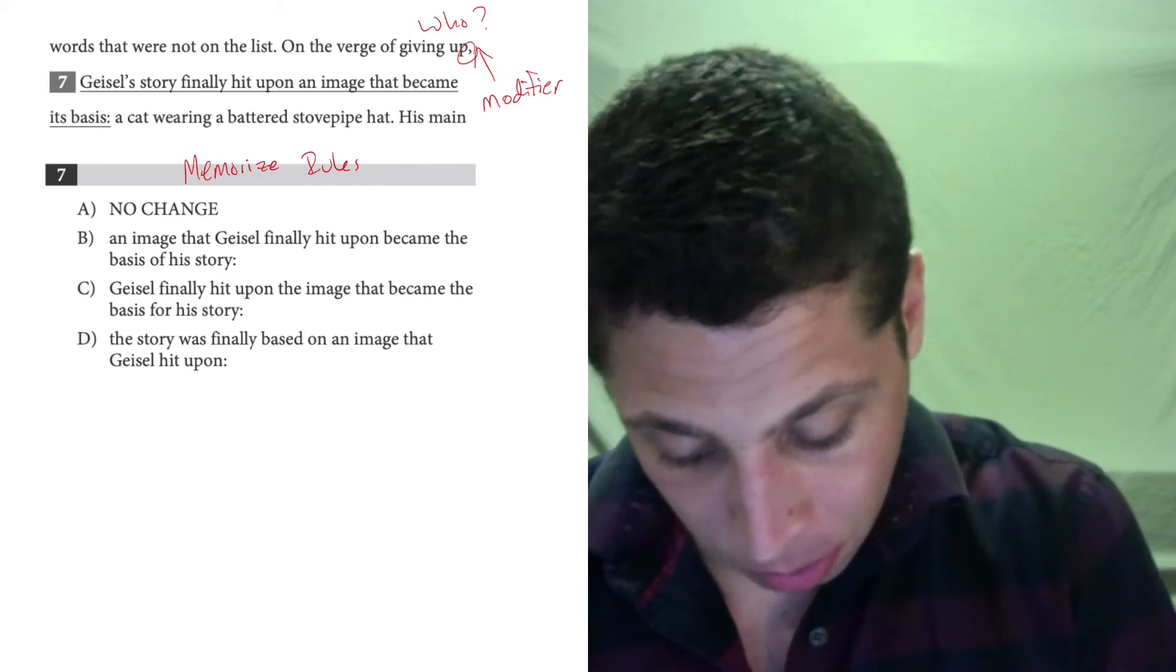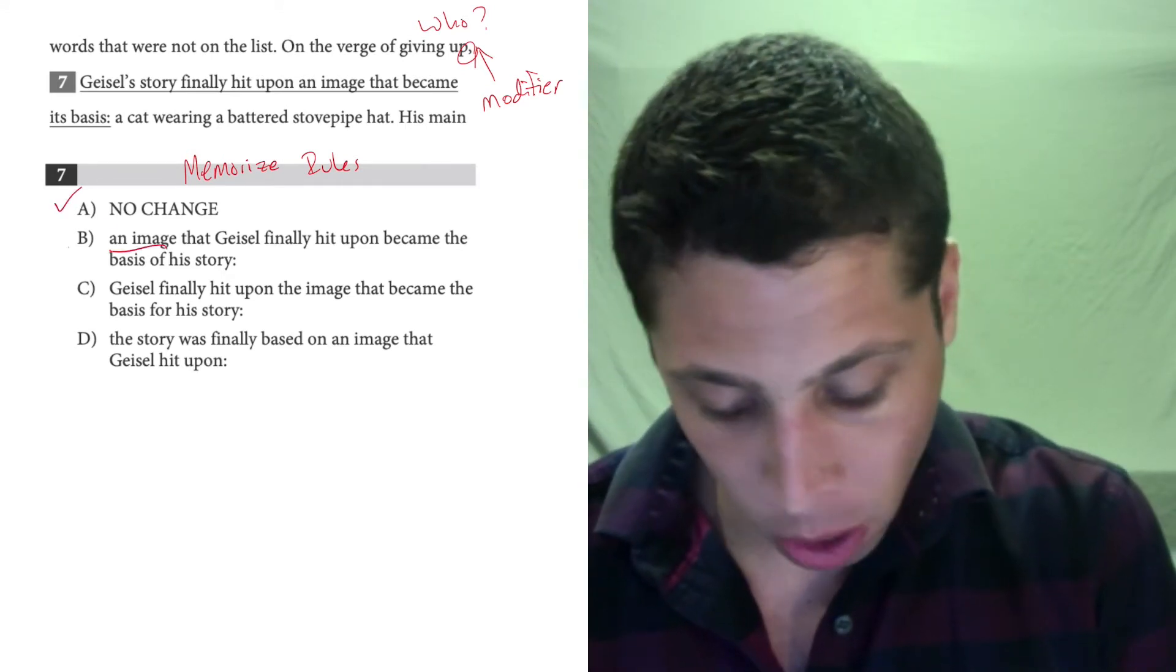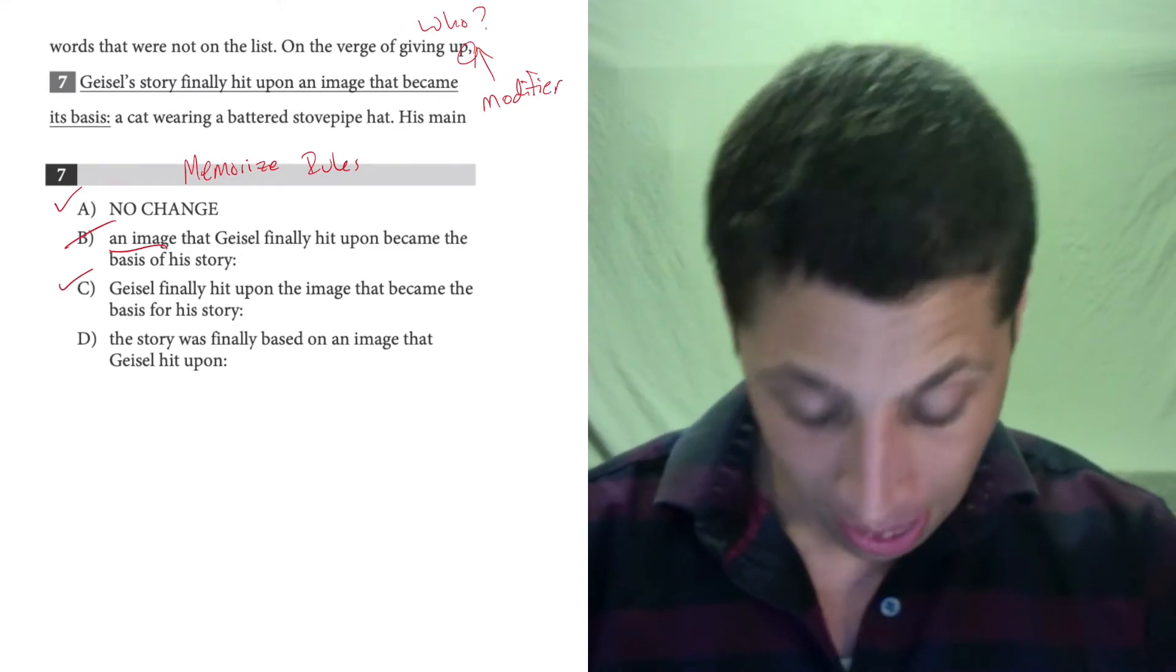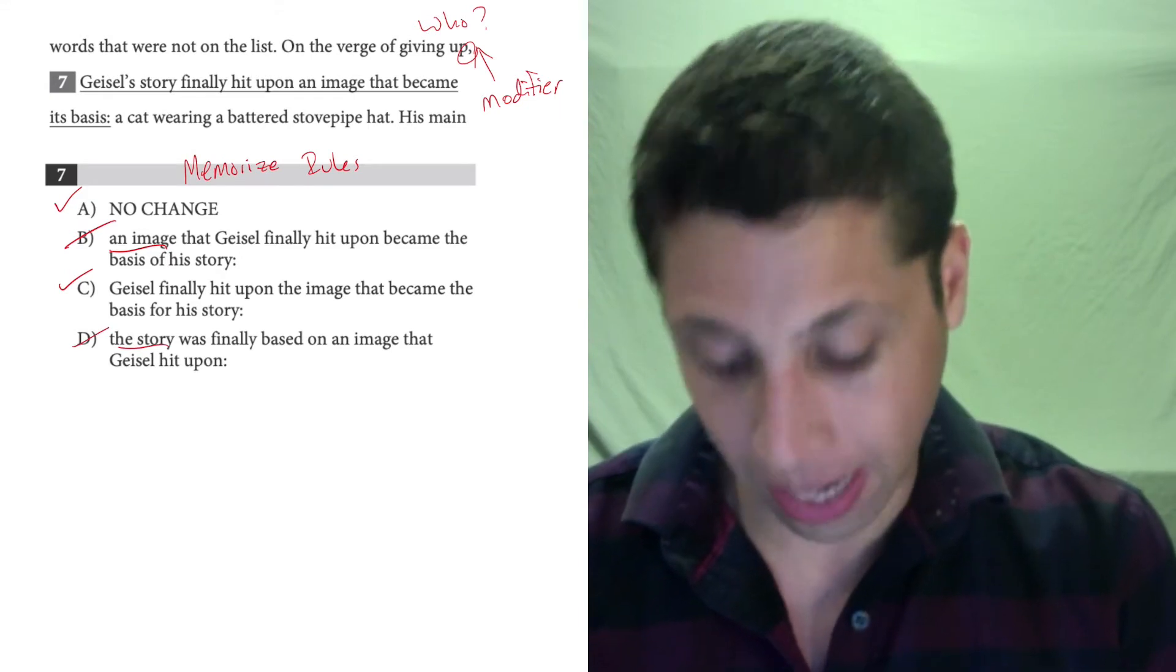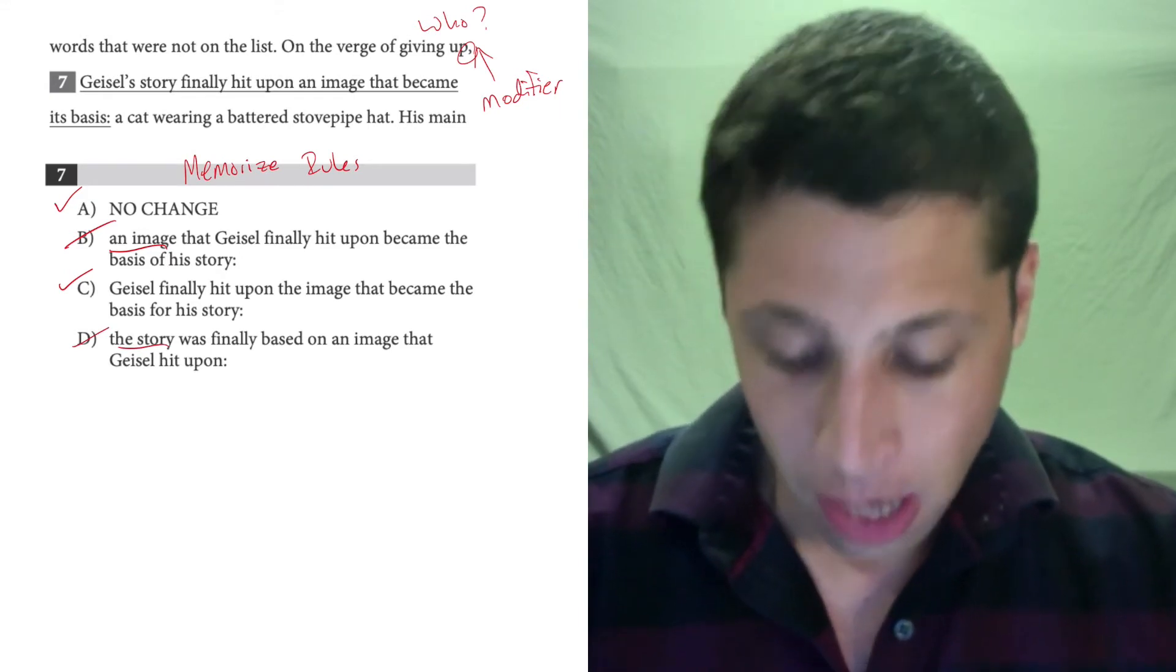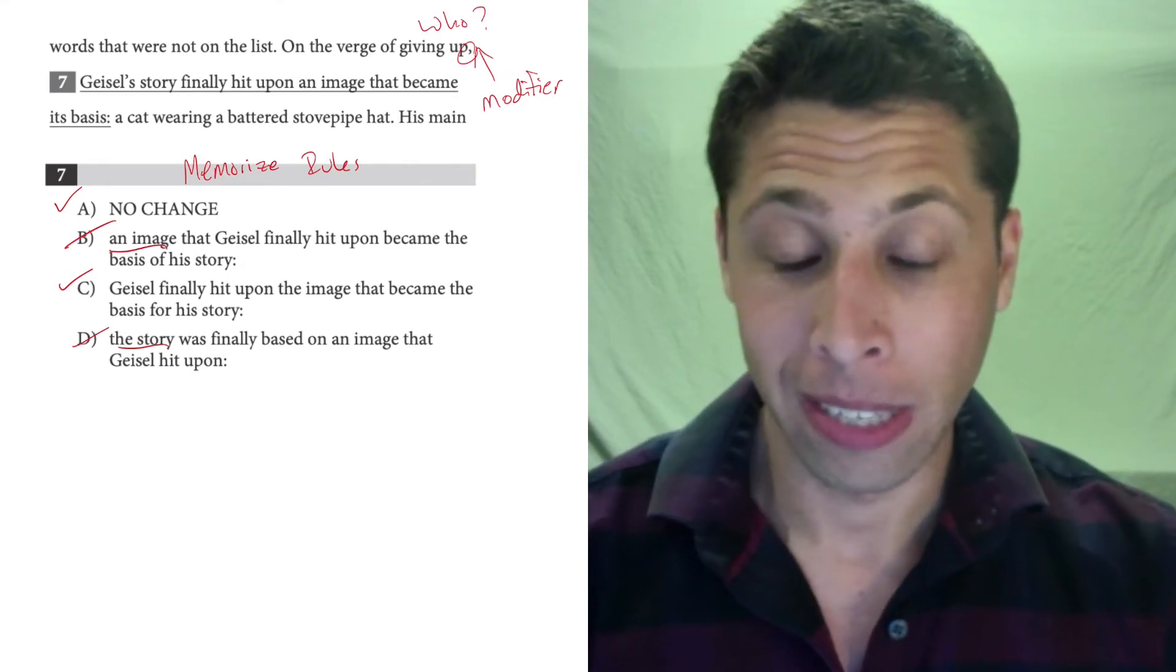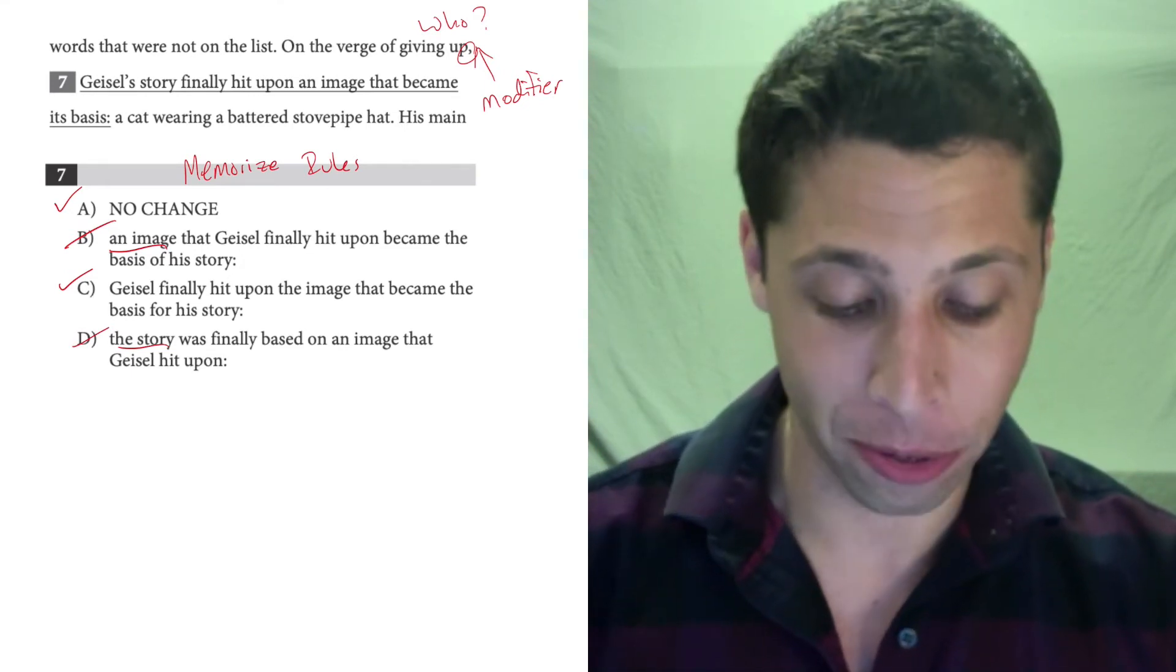So that's choice A. That seems to match. An image? No, that's not right. An image isn't going to give up. There's Geisel again. That sounds pretty good. And D, the story? Nope. A story can't give up. So we have two choices right now that seem to follow the grammar rule, but if we truly know the grammar rule, it's actually only one.